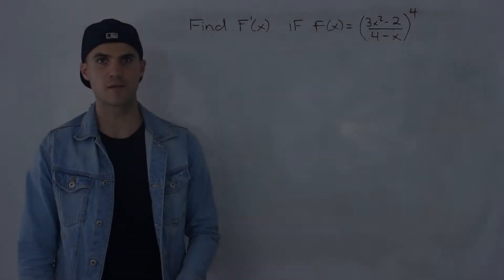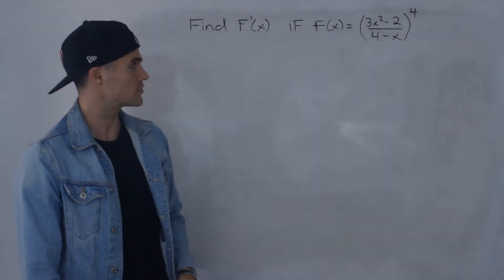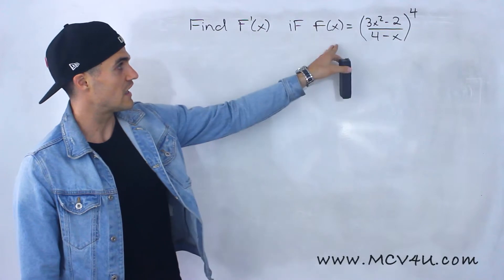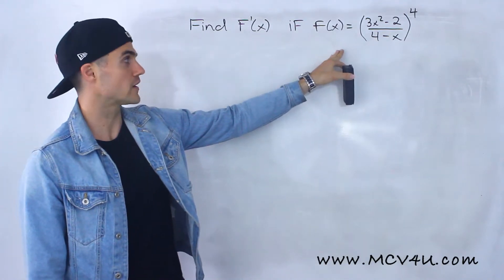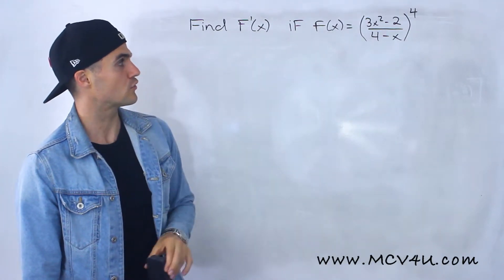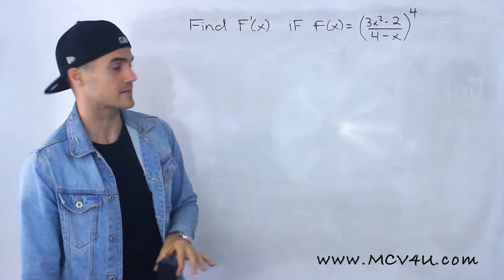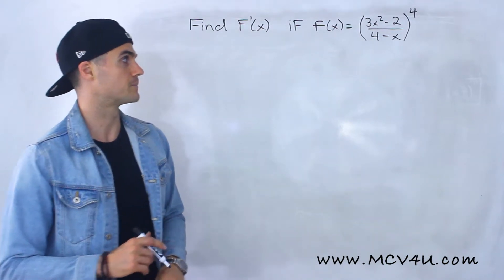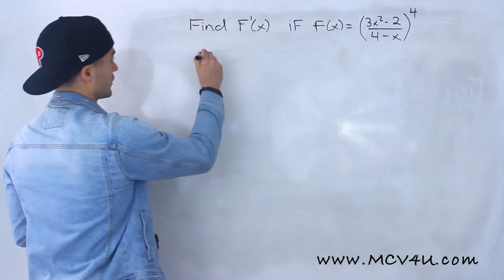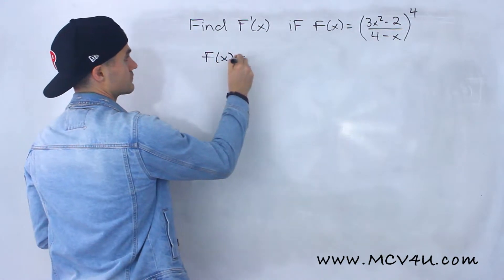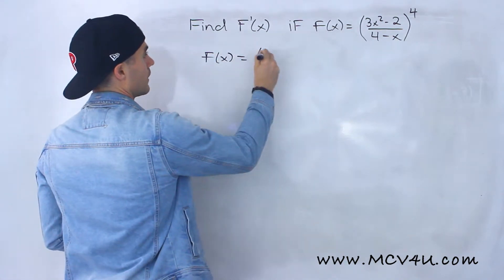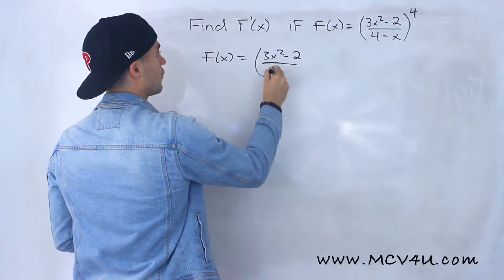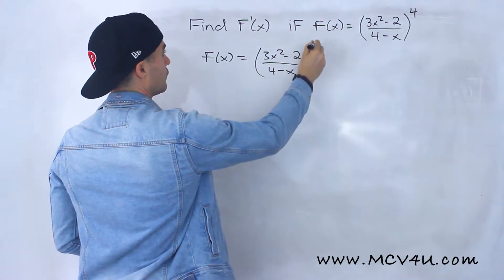Welcome back guys, Patrick here, and moving on to another chain rule example. We have to find the derivative if f of x is 3x squared minus 2 over 4 minus x, all to the power of 4. So rewriting this over here, we got 3x squared minus 2 over 4 minus x to the power of 4.